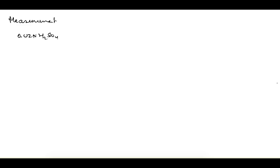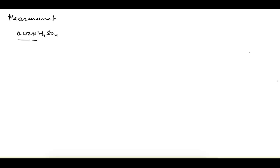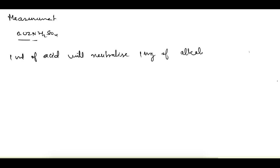We use 0.02N H₂SO₄ for the titration for a specific reason: if you use this titrant, then 1 ml of 0.02N H₂SO₄ will neutralize 1 mg of alkalinity expressed as CaCO₃. So if we find out the amount of acid used, we can directly link it with the alkalinity. That is why we prefer using this acid. To understand this further, we need to go back to basics.